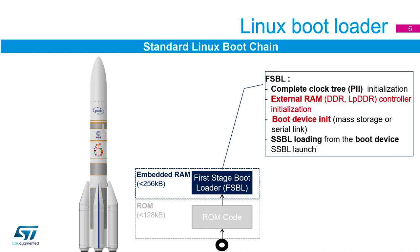The first stage bootloader is loaded through whichever method — in the case of our board, the SD card. It's loaded into the embedded RAM inside the chip. This code will then do the complete clock tree setup, because it has to set up all the clocks to run DDR. It also initializes the DDR controller, and you might then change to a different storage device for loading the second stage bootloader.